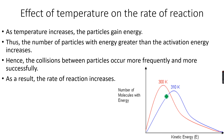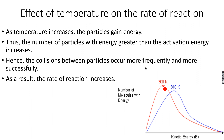Let's understand this using a Boltzmann distribution curve. At 300 Kelvin, we have this Boltzmann distribution — the red one. And at 310 Kelvin, we have the blue Boltzmann distribution curve. When the temperature increases, the peak of the curve shifts to the right, and the curve becomes flatter from the top. You have to remember these two things.